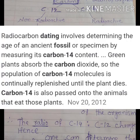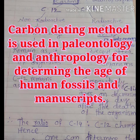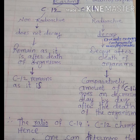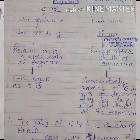The carbon dating method is used in paleontology and anthropology for determining the age of human fossils and manuscripts. Once the age of a fossil has been determined by this technique, it becomes very easy to deduce information about other erstwhile organisms — we can easily gain information about organisms that previously existed.